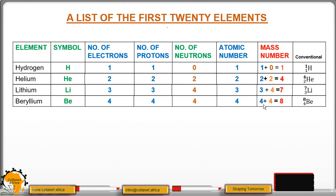Beryllium is 4. Following the same pattern, the mass number will be 4 plus 4 to get 8, written with 4 as the subscript — the atomic number or the number of protons — and 8 as the mass number, which is the sum of protons and neutrons.